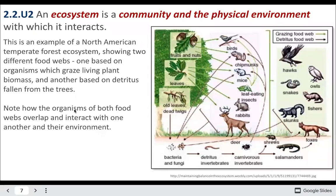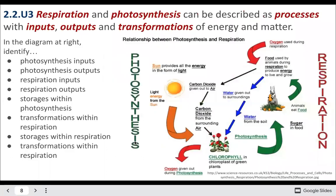Looking at the diagram for photosynthesis and respiration: carbon dioxide and water come into the plant, and the plant produces sugar and oxygen. For animals, the inputs are sugar and oxygen, and animals produce water.